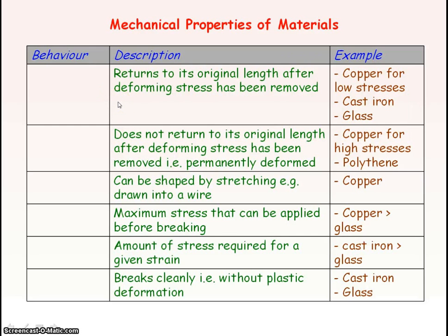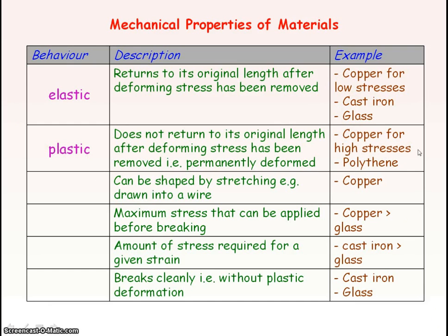A material that returns back to its original length after the deforming stress or force has been removed is known as an elastic material. Examples include copper for low stresses — that is, stresses below the elastic limit — and also cast iron and glass. A material that does not return back to its original length after the deforming stress is removed is known as a plastic material, meaning it has a permanent change in length. Examples include copper for high stresses — above its elastic limit — and polythene.